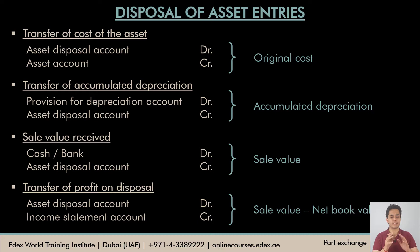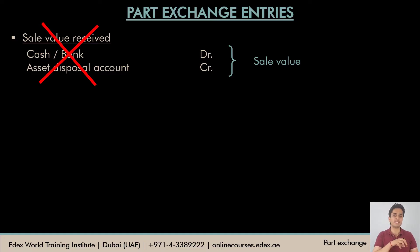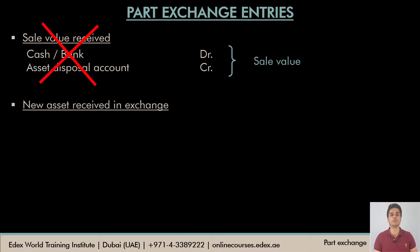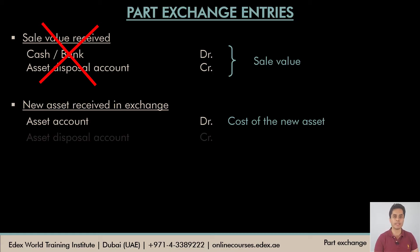All the disposal entries apply to part exchange except the third entry, which changes. In a part exchange we do not receive cash or a cheque for the old asset, so it makes no sense to debit cash or bank. Instead, we receive a new non-current asset. So the first step is to debit the new asset account with the cost of the new non-current asset. The second step is to credit the disposal account with the value the supplier has attached to the old non-current asset, which is deducted from the price of the new asset.